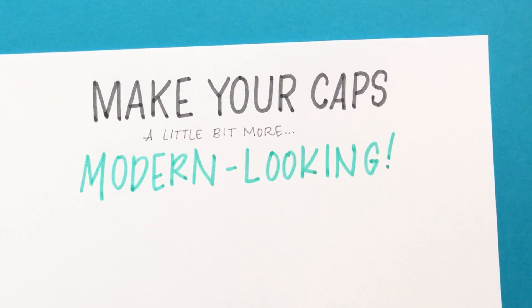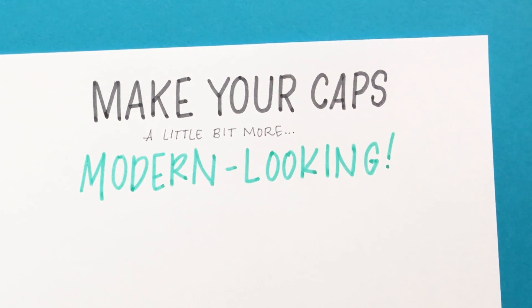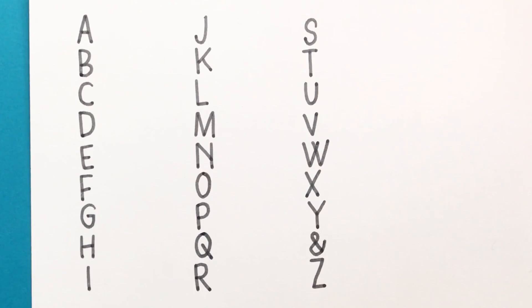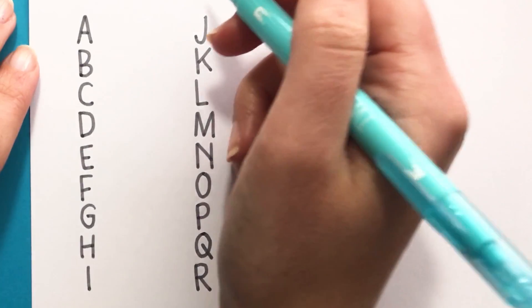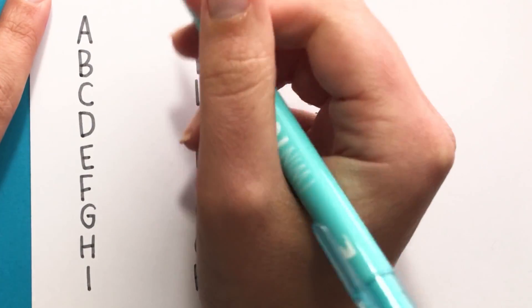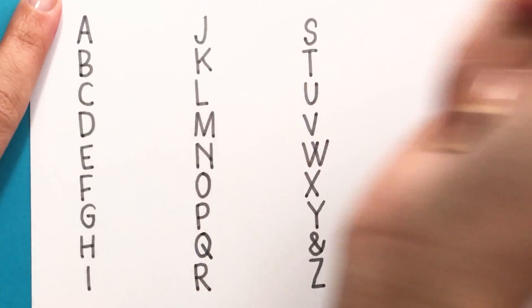So we're going to dive into each letter and talk about the differences and things that you can switch up to make them look a little bit more modern. So we're just going to go letter by letter here starting with A. So again all of these still look good, it's just that they can look a little bit more unique or have some more modern fun and flair.